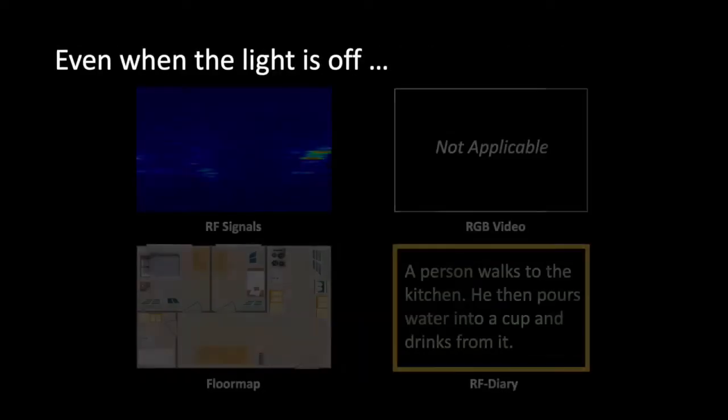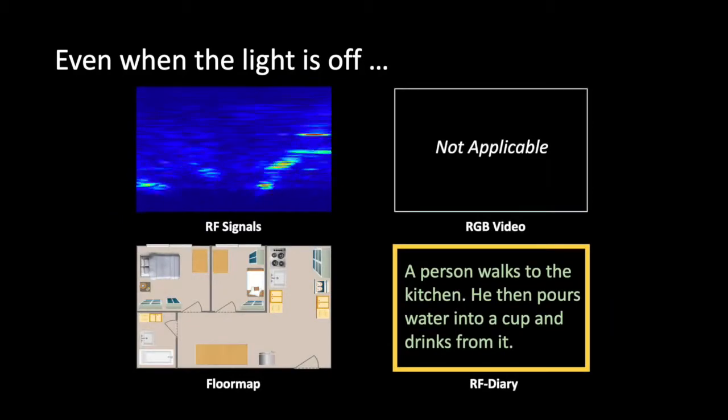Let's take another case that typically fails with camera when the person is in the dark. Here the model is outputting, a person walks to the kitchen, he then pours water into a cup and drinks from it. And indeed, this is what happens although from the RGB perspective, it is totally dark and not interpretable.